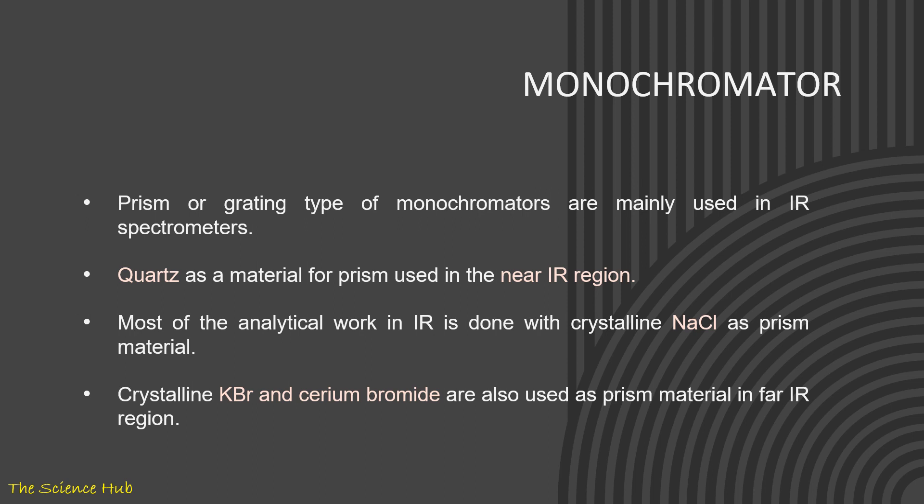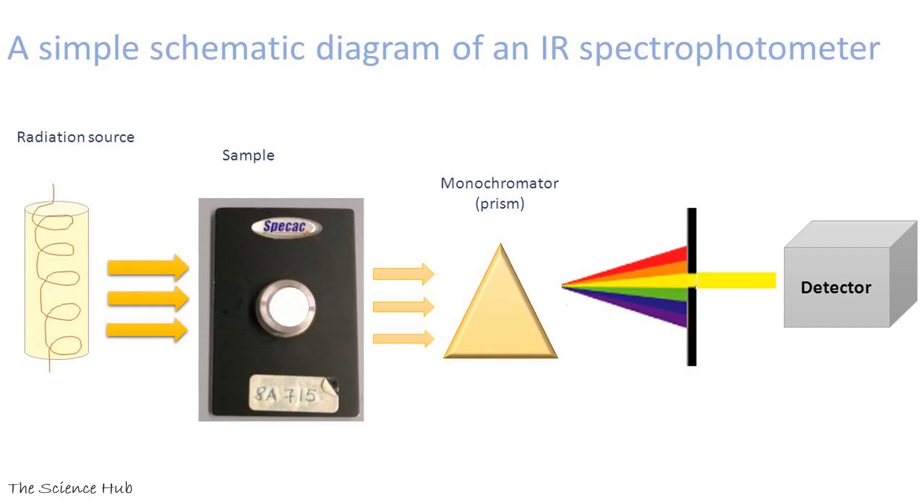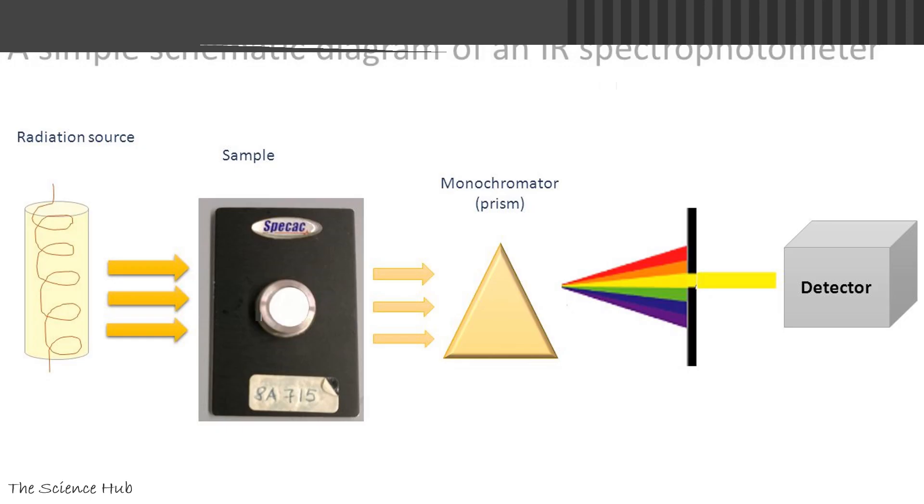Here you can observe all instrumentation. First, radiation source is there. From radiation source, IR lights or radiations are coming out and incident to the sample. Sample absorbs that radiation and remaining frequencies, remaining wavelengths come out from that. And monochromator will disperse the radiation and we'll get particular frequencies which will be detected and interpreted by detector and recorder.